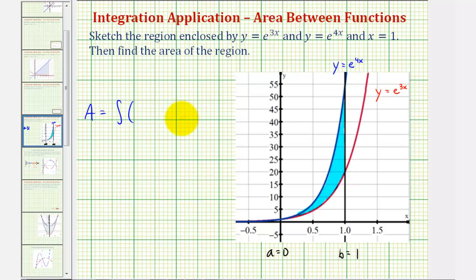Again, the top function minus the bottom function which would be e to the power of 4x minus e to the power of 3x integrated from 0 to 1.